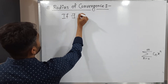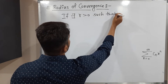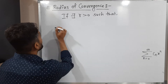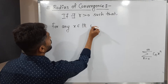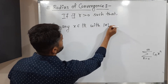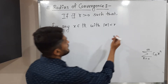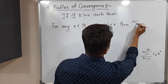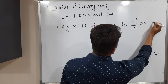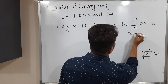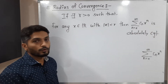If there exists r greater than 0 — we want a positive real number r — such that for any x belonging to the reals with |x| less than r, that means any real number x whose modulus is less than r, then for that particular value of x, the series c_n x raised to n is absolutely convergent. Absolutely convergent means if you apply the modulus, then also it is a convergent series.